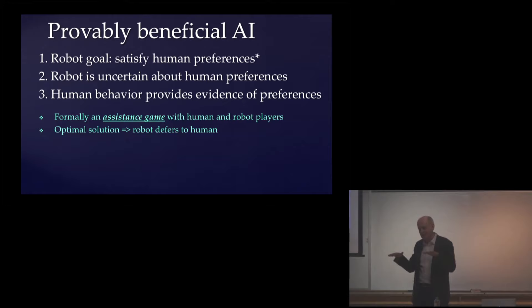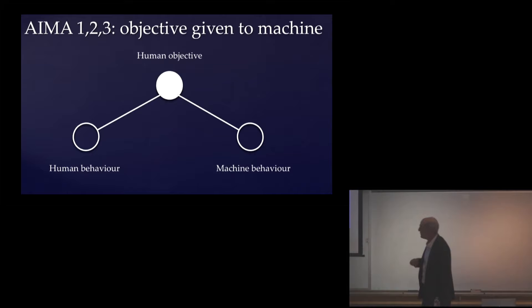The robot is always going to be uncertain about what those preferences are. But there is a grounding for preferences - our preferences are manifested in some form by our behavior. Every choice that we ever make, including your choice to be sitting here listening to me, is evidence about your underlying preferences. And it's imperfect evidence because we don't behave rationally. Our actions do not always maximally satisfy our preferences.